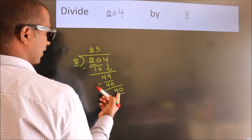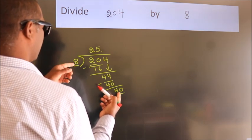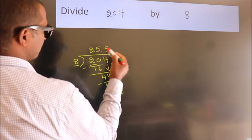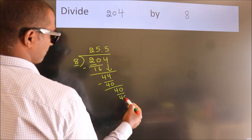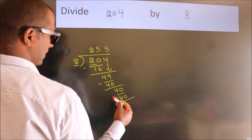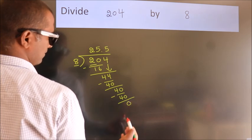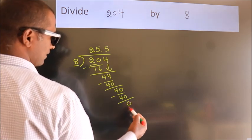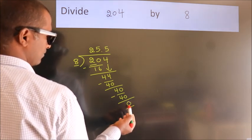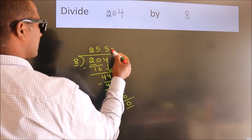When do we get 40 in the 8 table? 8 fives, 40. Now we subtract. We get 0. Here we got remainder 0. So this is our quotient.